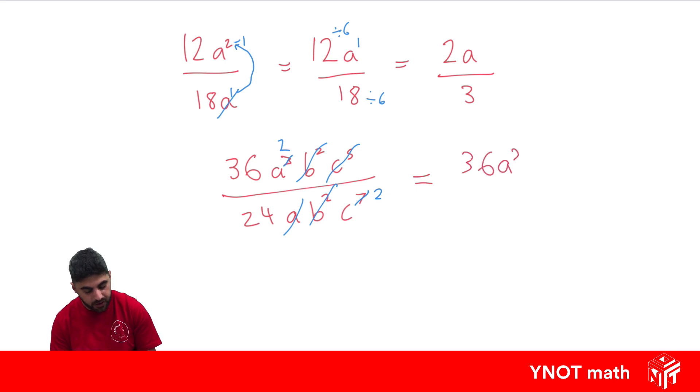36a squared, because the b squared and the c to the 5 are gone, over 24c squared, because the a and the b squared are gone from the denominator. And all we can do now is just simplify the numbers, because they're both divisible by 12.